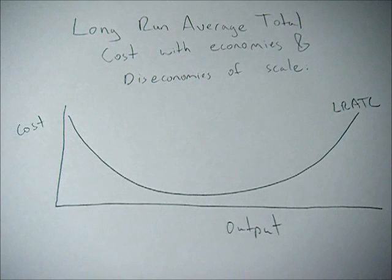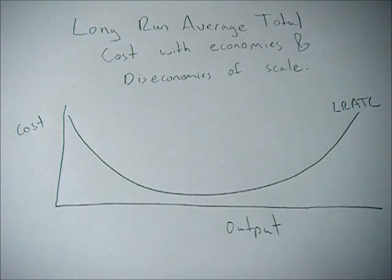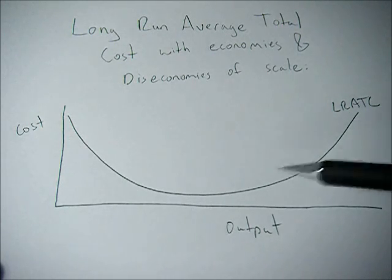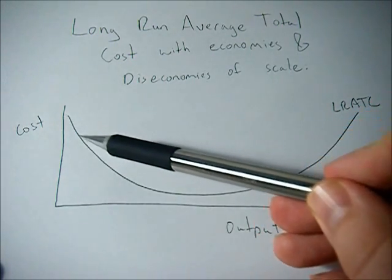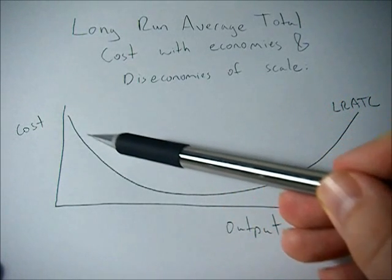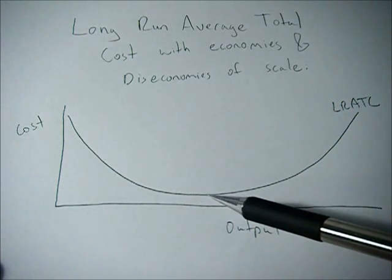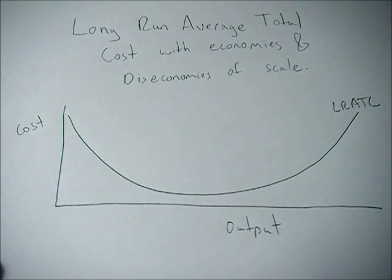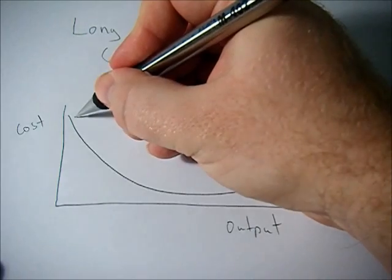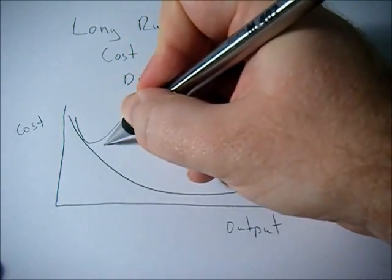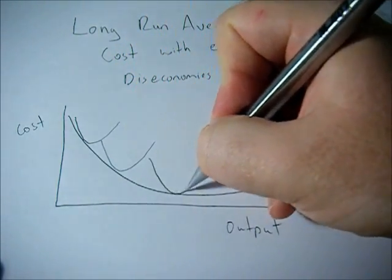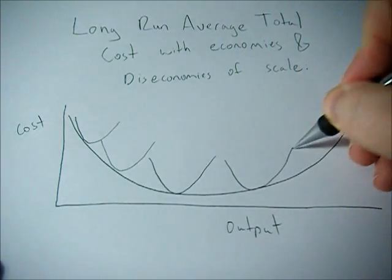This video is going to go over the long run average total cost curve, with a discussion of economies and diseconomies of scale and a little bit of constant returns to scale. When we look at our long run average total cost curve, we see this relationship where as output increases, costs go down. Then at some point they hit a minimum and go back up again, giving us this U-shaped curve. We get this long run average total cost curve through a series of short run average total cost curves.